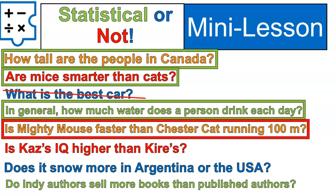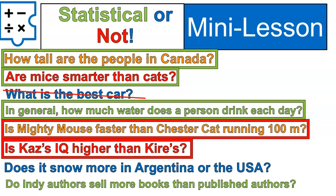Is Kaz's IQ higher than Kyer's? These are two people, Kaz and Kyer. That's a non-statistical question. You would have to gather the data — what's Kaz's IQ and what's Kyer's IQ — and then make a conclusion. But you don't have to find an average or look at variable data, data that's changing. IQs typically stay the same throughout your life.